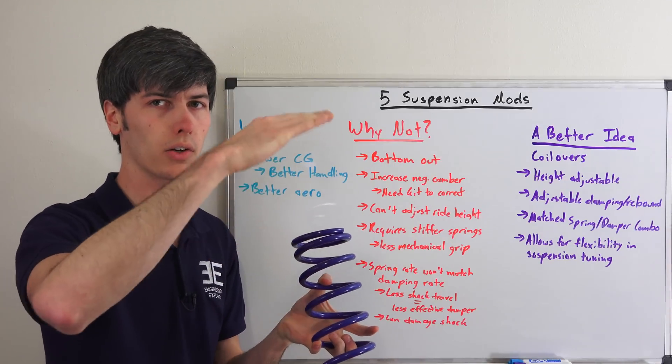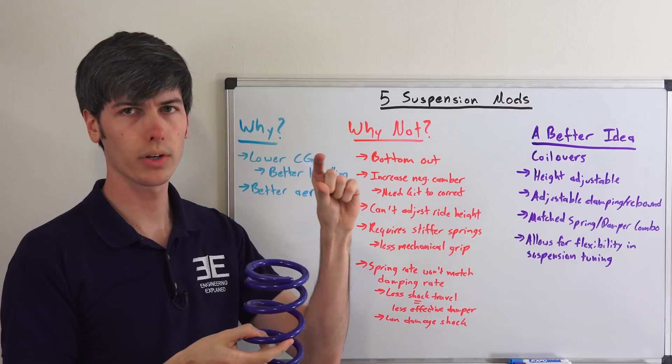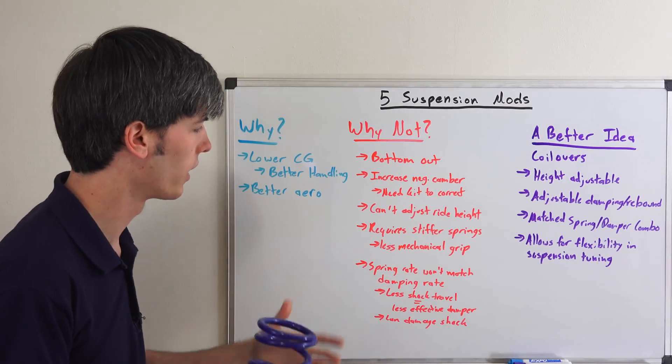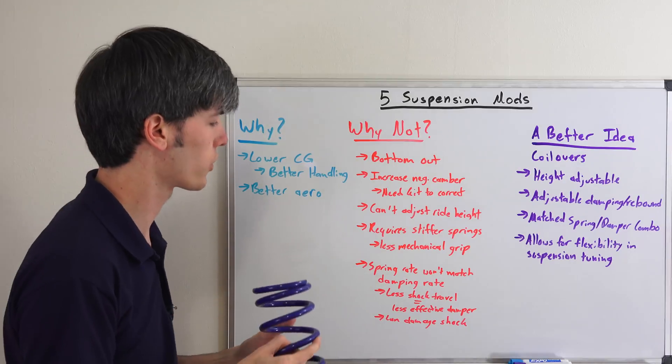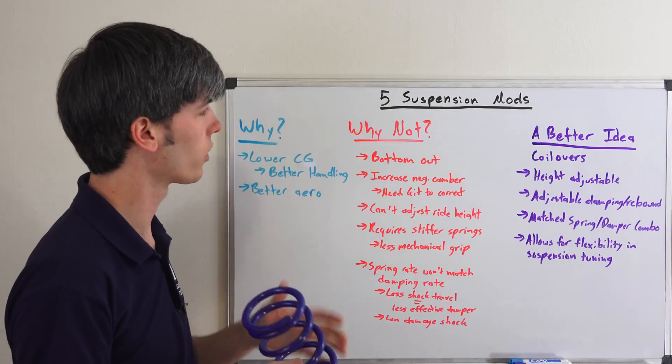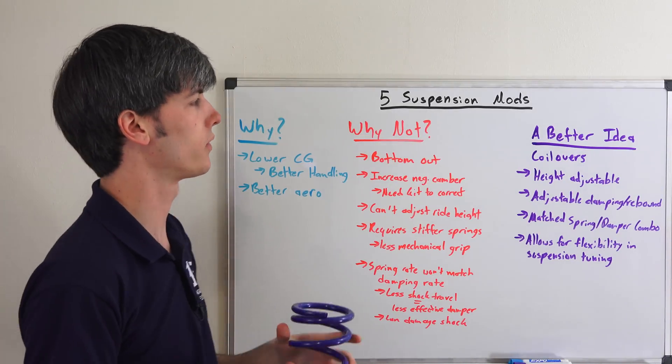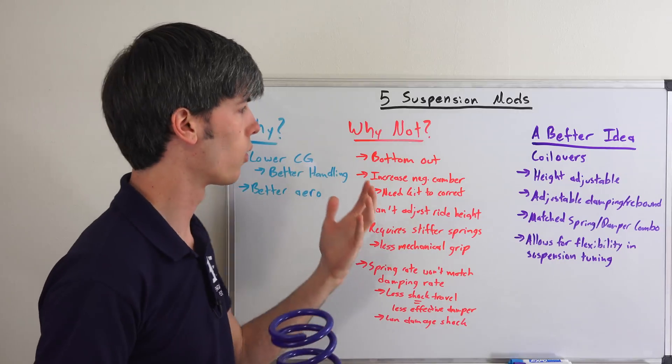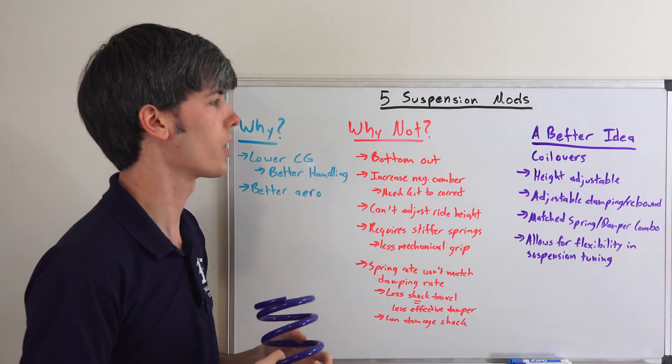But that previous shock absorber was designed for a spring that would have more travel. So it's designed to be effective across a broader range, and now you're shortening the range across which it operates. In doing so, you're making that shock absorber less effective and you can also damage it.